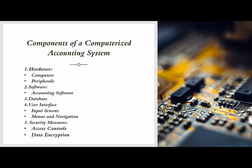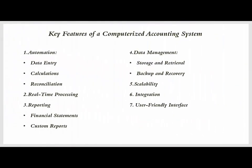Key features of a computerized accounting system. Automation: Data entry — automatic recording of transactions reduces the need for manual entry. Calculations — automated calculations for taxes, discounts, interest, and other financial figures. Reconciliation — automatic bank reconciliation helps match the company's records with bank statements.